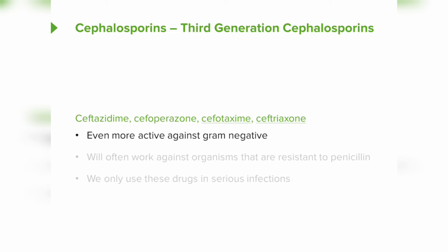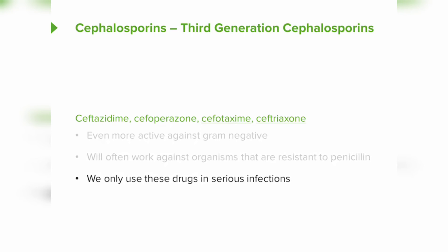The third-generation agents are more gram-negative active. The key drugs to know are cefotaxime and ceftriaxone. Cefotaxime is our go-to drug — it's a very good gram-negative agent and will often work against organisms resistant to penicillin. We only use these drugs in serious infections, and in general they're only available in intravenous form.